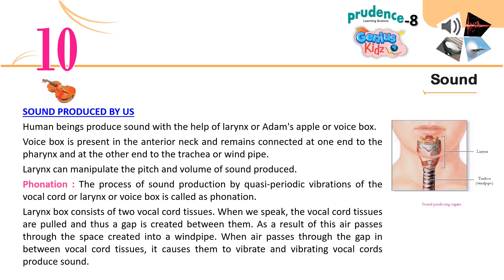Sound produced by us: human beings produce sound with the help of the larynx, also called the Adam's apple or voice box. The voice box is present in the anterior neck and remains connected at one end to the pharynx and at the other end to the trachea or windpipe. The larynx can manipulate the pitch and volume of sound produced.